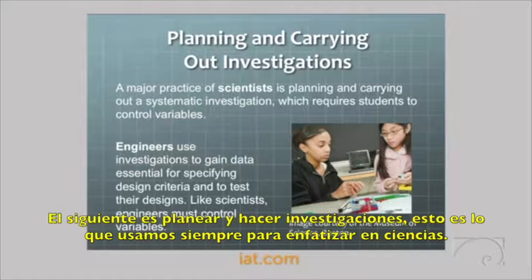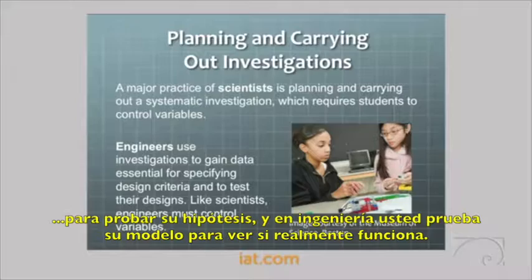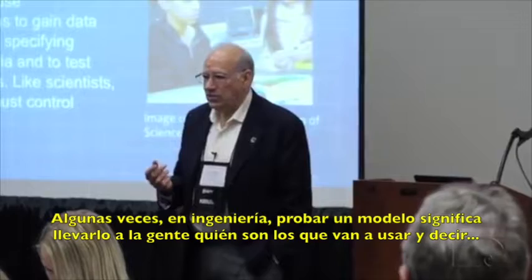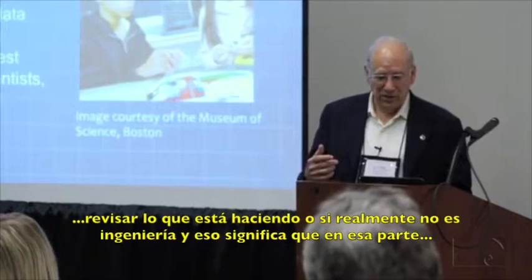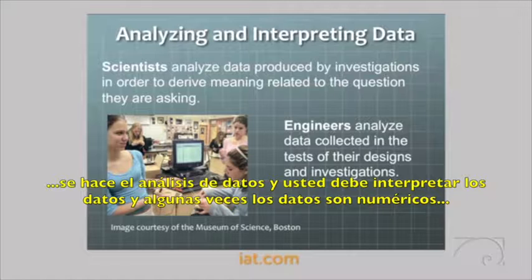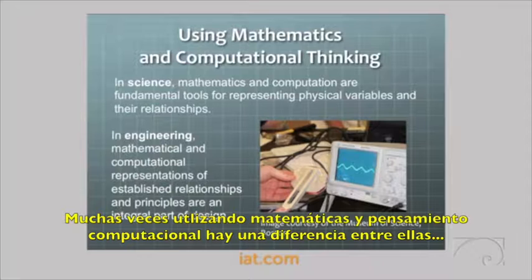The next practice is planning and carrying out investigations — what we always used to emphasize in science: how to do a controlled experiment. In science you test your hypotheses; in engineering you test your model to see if it actually works. Sometimes testing a model means taking it to the people who are actually going to use it and asking, 'Would you use this?' But then you've got to use that information to revise what you're doing, or it really isn't engineering.